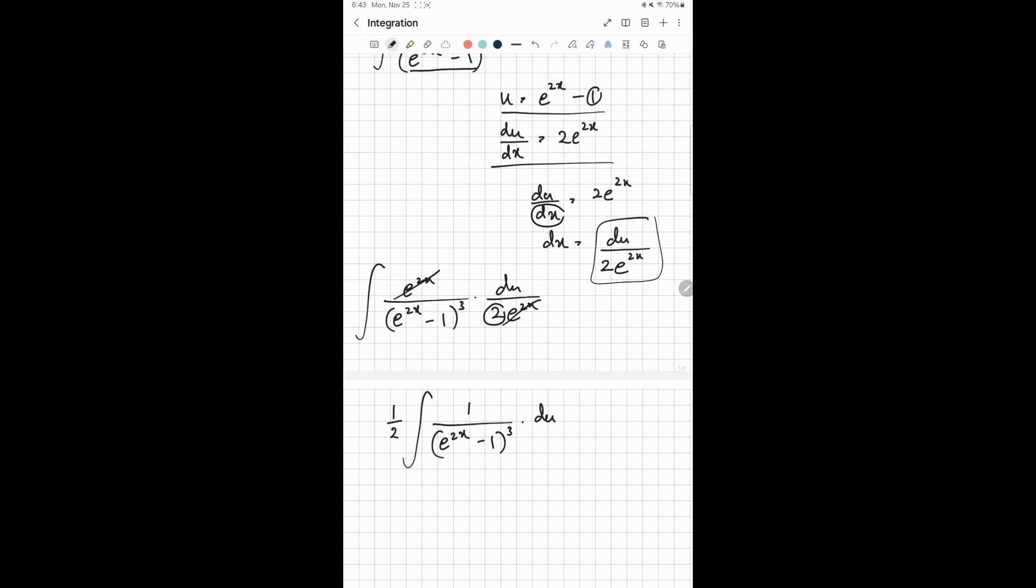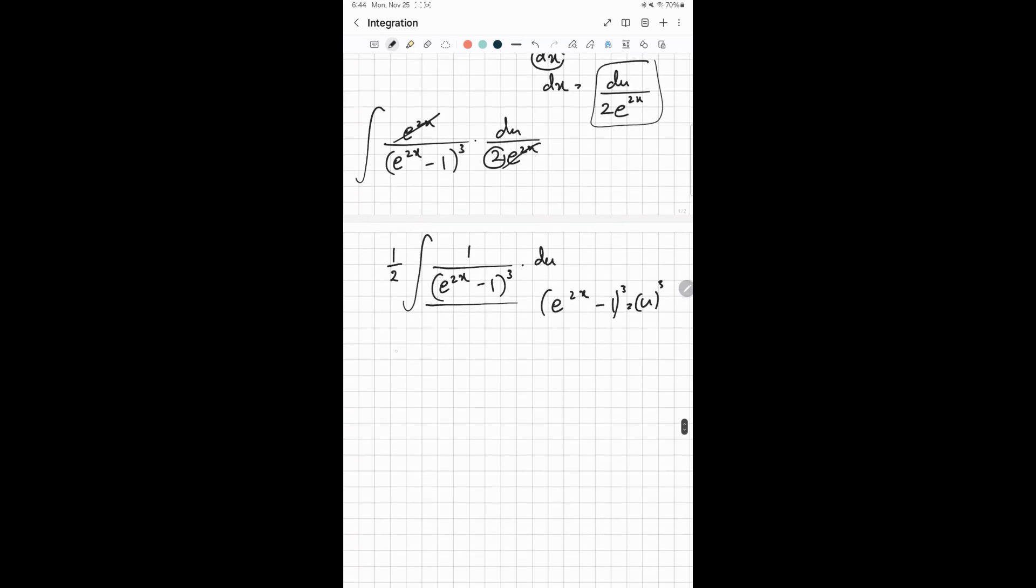We previously took the substitution of e^(2x) - 1 equals u. So instead of this, you can just put in u. And since it's to the power 3, it's going to be u^3. So then you end up with half times the integration of 1 over u^3 du.